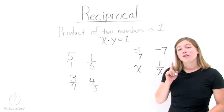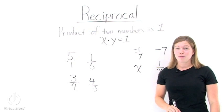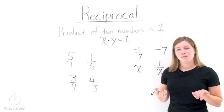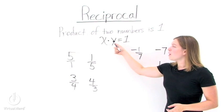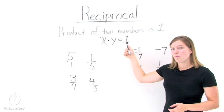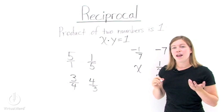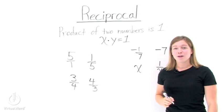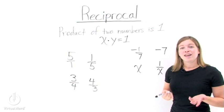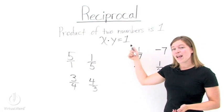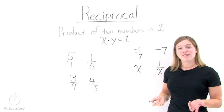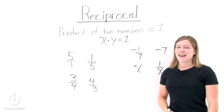Now a bonus question. There's one number that does not have a reciprocal. What is it? Well, if we multiply two numbers together and they equal 1, what number can never be multiplied by any other number to equal 1? 0. You can never multiply 0 by anything to get 1. You'll always get 0. So 0 has no reciprocal.